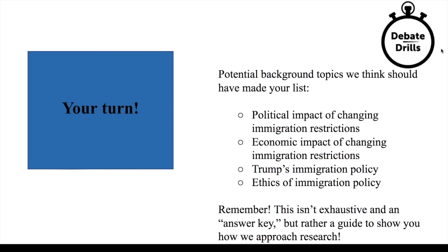Here you can see a list of potential background topics we think should have made your list. You may have seen, for example, a lot of articles or ideas about the political impact of changing immigration restrictions — such as how people in Congress often debate over whether or not we should reduce immigration restrictions, or how voters have different opinions. Understanding the political impact of reducing restrictions is going to be a huge part of understanding the immigration topic as a whole.